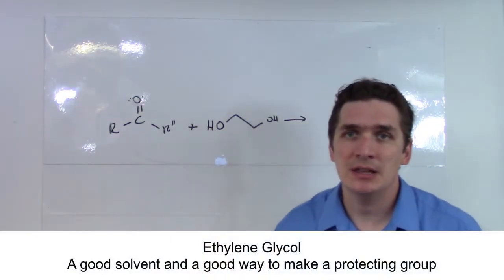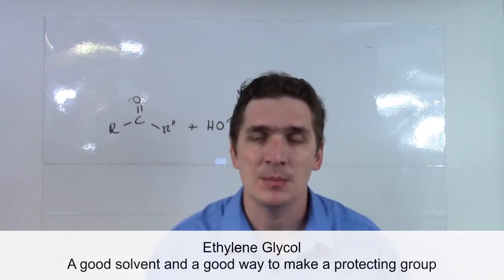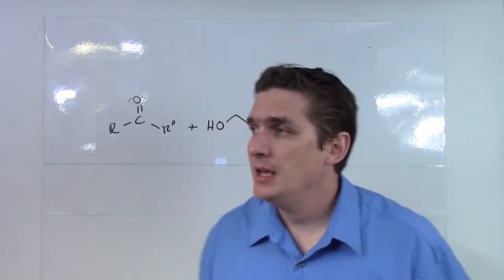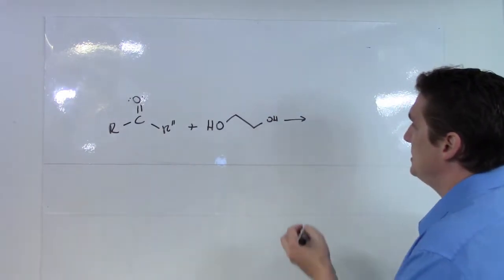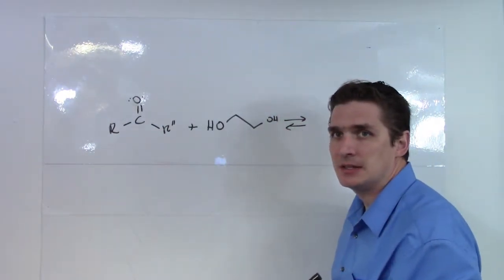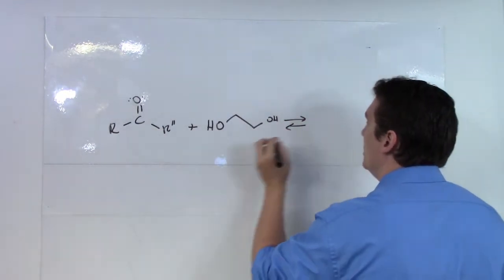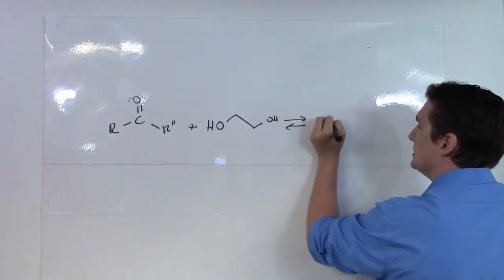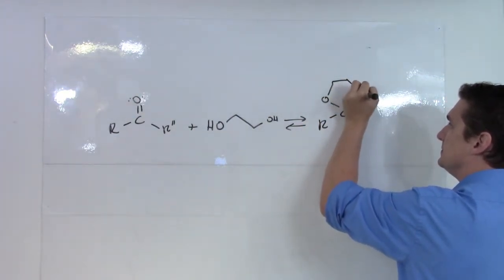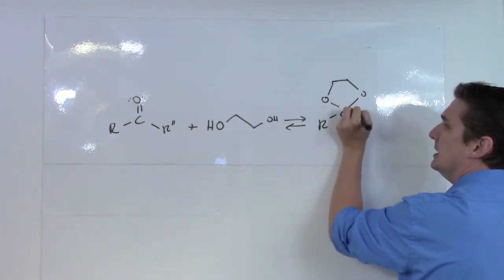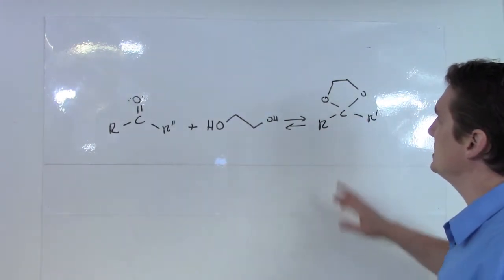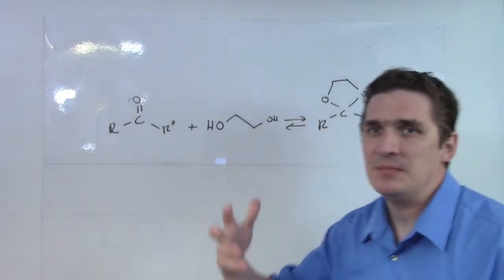Ethylene glycol has two carbons with a diol — two hydroxyl groups. If we run this under a high excess of ethylene glycol, we end up producing a hemiacetal. This hemiacetal is particularly stable because it forms a 5-membered ring.